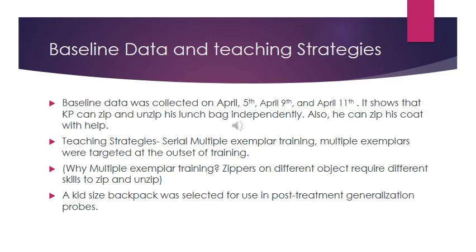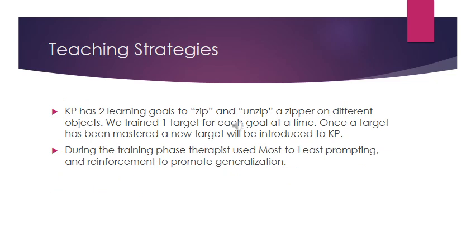A kid-sized backpack was reserved for use in the post-treatment generalization probe. KP has two learning goals: to zip and to unzip a zipper on different objects. We train one target for each goal at a time. Once a target has been mastered, a new target is introduced to KP. During the training phase, therapists use most-to-least prompting and reinforcement to promote generalization.